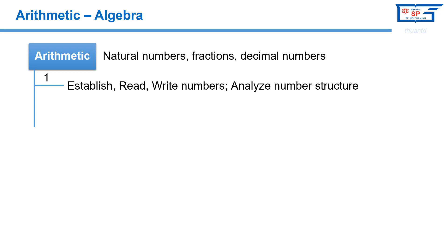Grade 2 students need to read and write numbers within the range of 1000, recognize hundreds, and perform the task of writing numbers as the sum of hundreds, tens, and units. Instead of determining the exact quantity, Grade 2 students can estimate the number of objects in groups of tens. Grade 3 students get acquainted with rounding numbers to the nearest 10, 100, 1000, and 10,000.